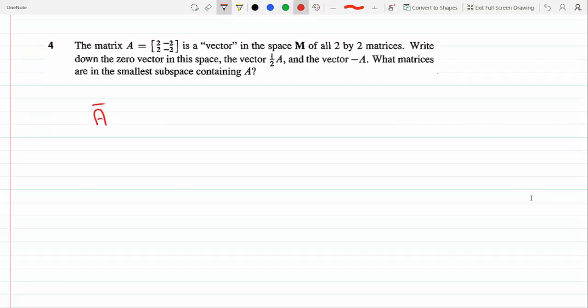Clearly, if we do [2, -2; 2, -2] and we add this to [0, 0; 0, 0], we will get back the same matrix [2, -2; 2, -2].